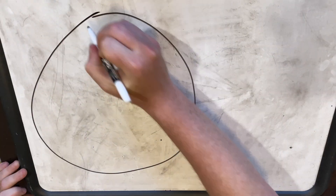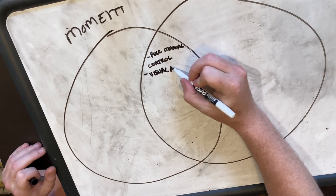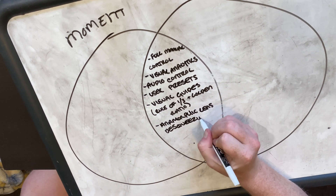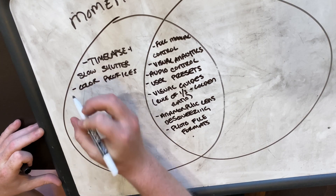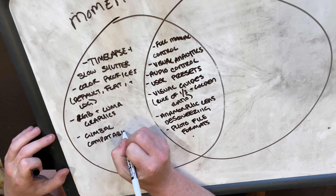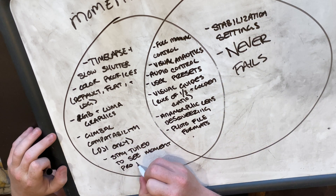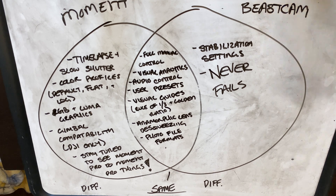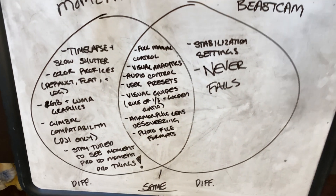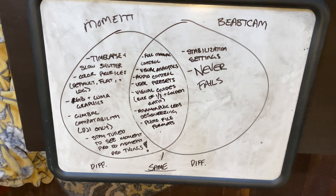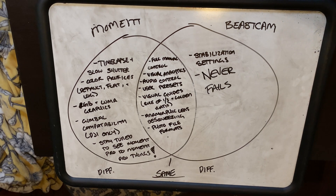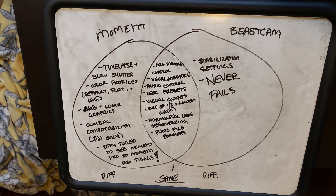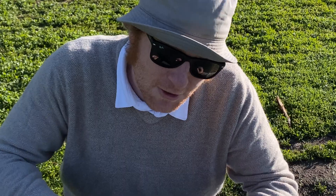I could just sit here and ramble on about both apps and you'd get very little from this video, or I can try and be hyper-organized and provide some sort of solution so that you get value from this. My solution is a Venn diagram so that you can see the similarities and the differences between the two apps, just like you would in second grade. Let's get to it!